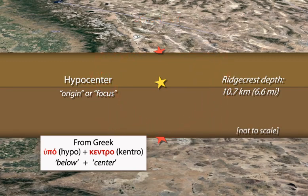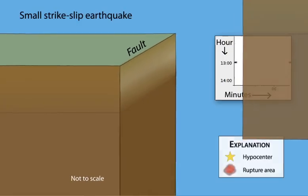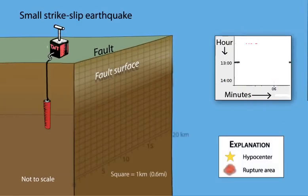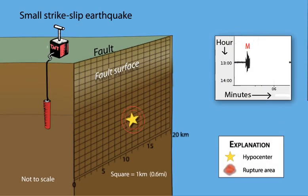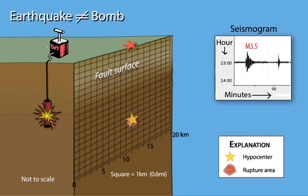What do we mean by the earthquake begins? Let's place a grid on this strike-slip fault surface. A small earthquake releases energy at its hypocenter suddenly, like a blast of TNT. But an earthquake is not like a bomb.